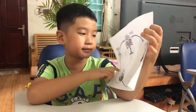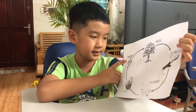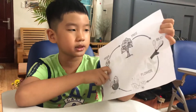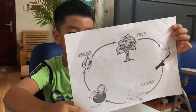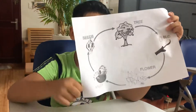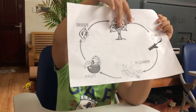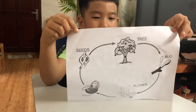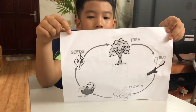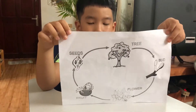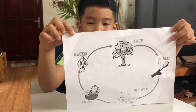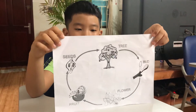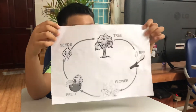An apple tree starts as a seed. Then it changes into a seedling. Then it grows into an adult apple tree. The adult apple tree can have flowers. Some flowers make fruit out of the seeds. Apple seeds can make apple seedlings.